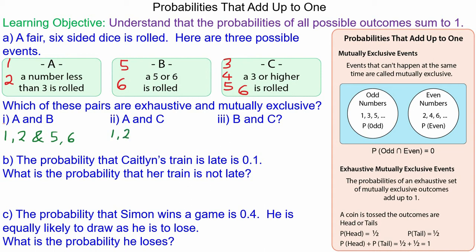For A and C, you can get a 1 and a 2, and a 3, 4, 5 or a 6, because it is 3 or higher. So they are mutually exclusive and exhaustive.